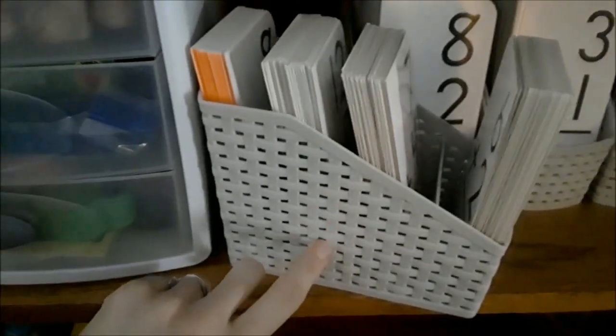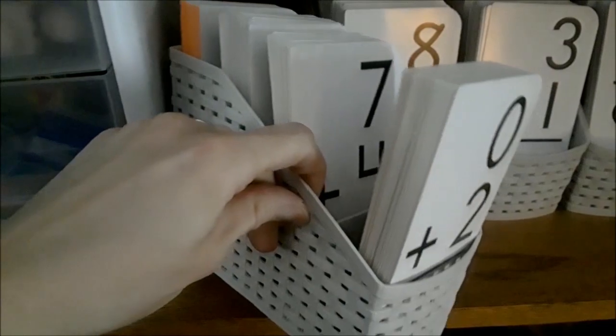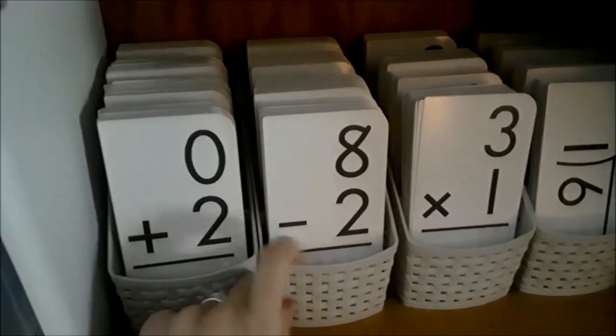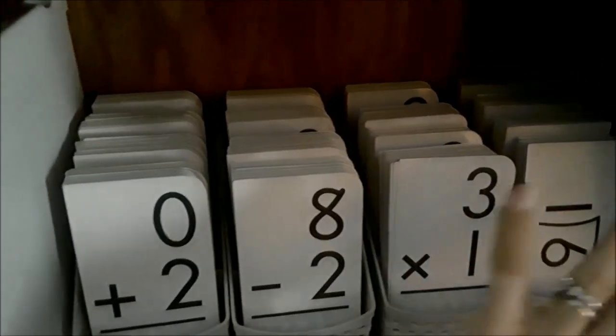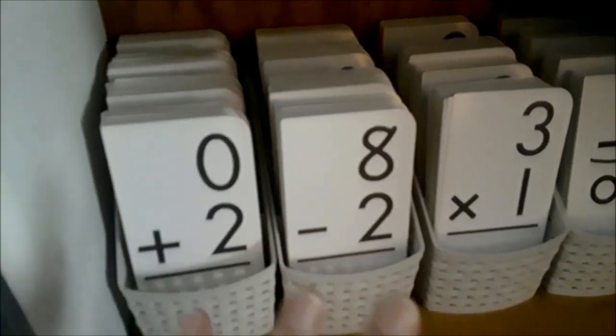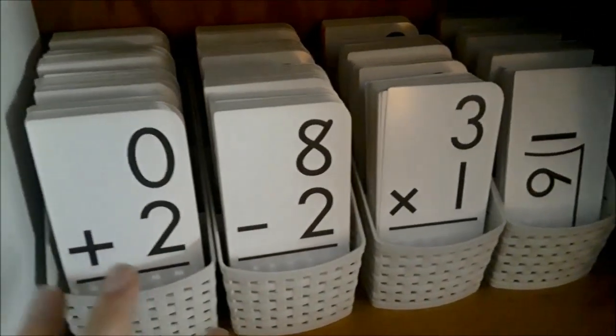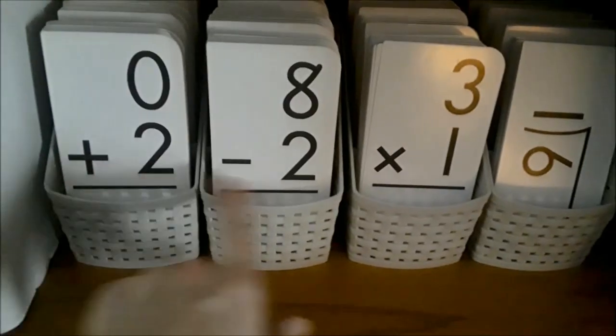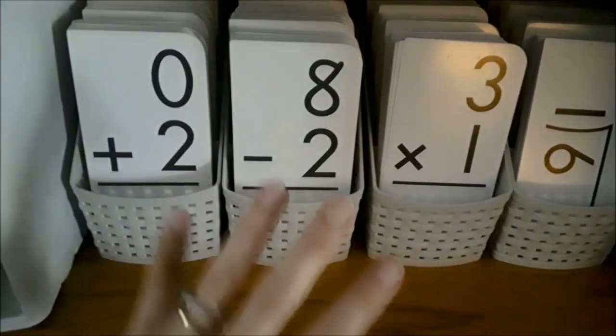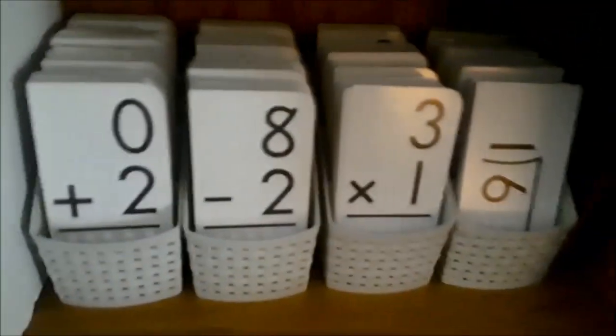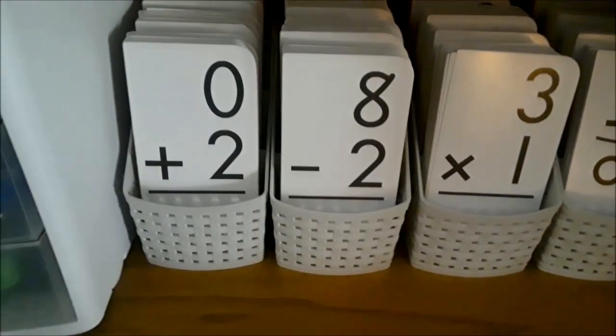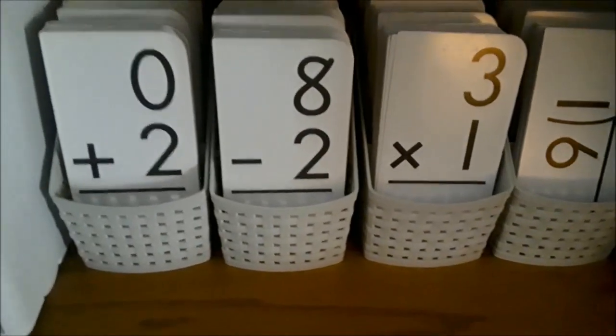These were actually, I think, cosmetic organizers—really sturdy, great little baskets. So I got one for each operation, and the great thing about this is they can be mixed up to study, because Robinson suggests mixing the operations. You do start with the lower numbers and work your way up to the bigger ones, but mixing operations is really good—it helps them pay attention to the symbol and what they're doing.